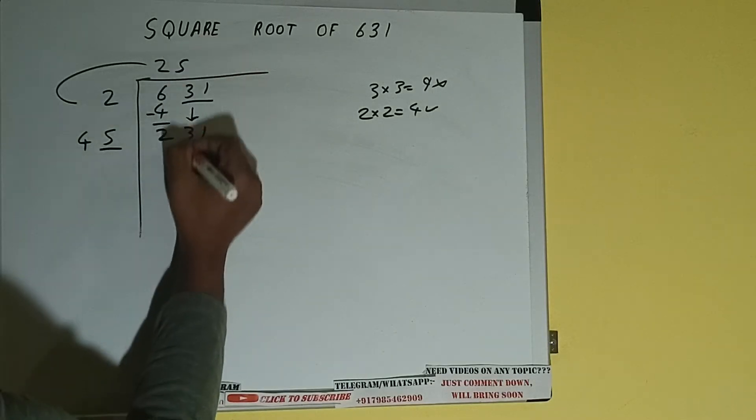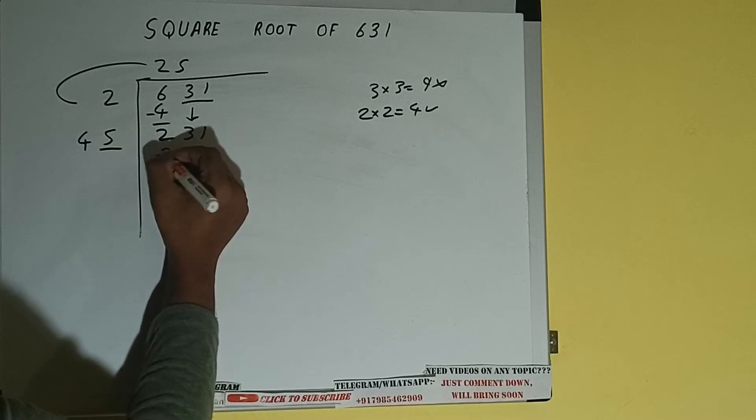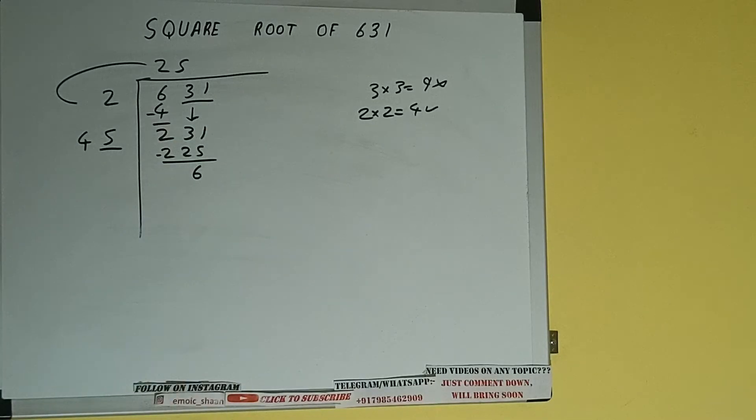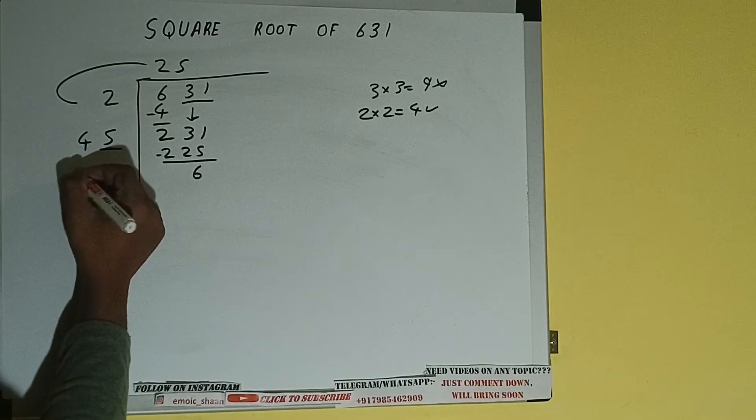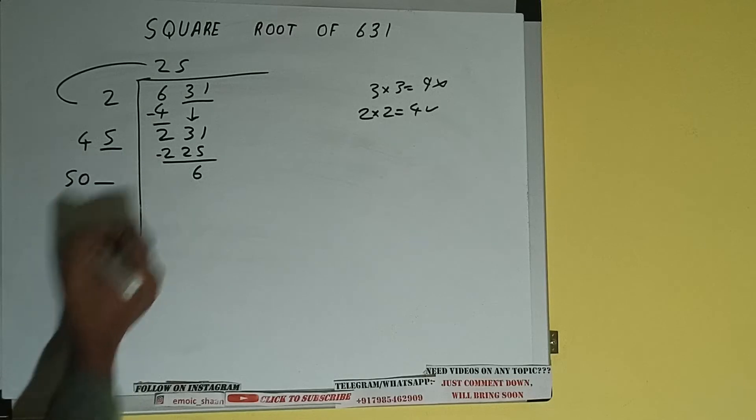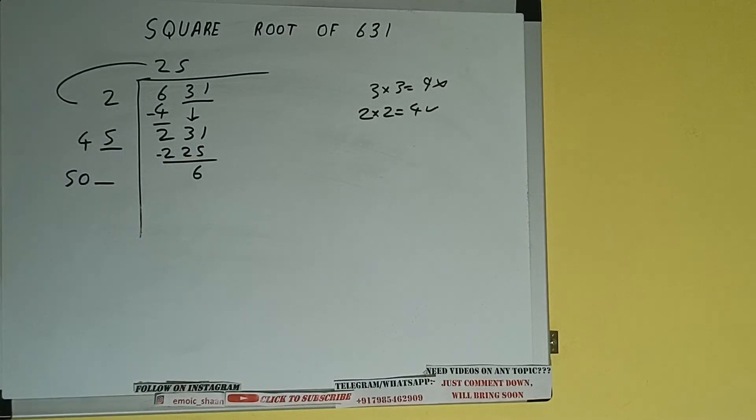Here and 5 here it will be 225 subtract, 6 will be left. Now 45 into 5 we did, so add both, so 45 plus 5 will be 50, write it here and keep a digit extra. This number we need to make it big.